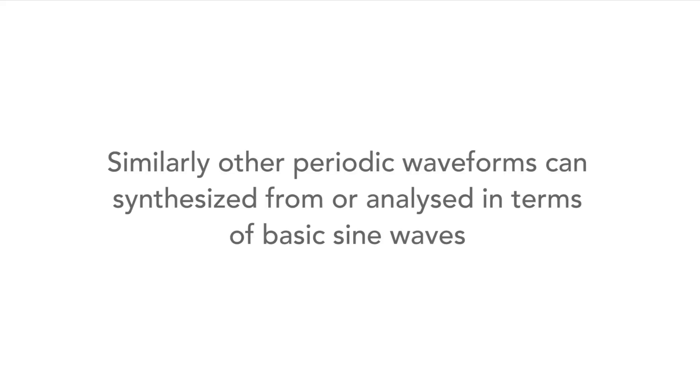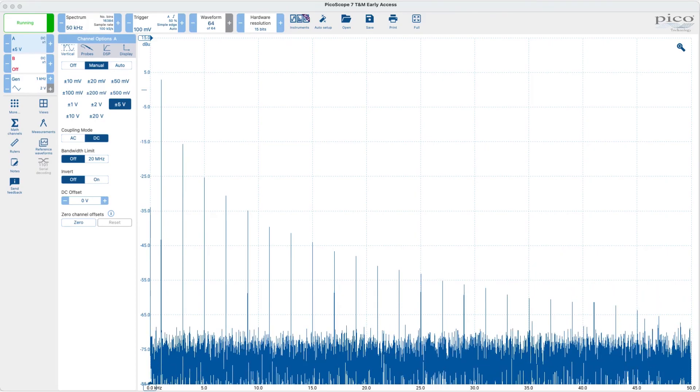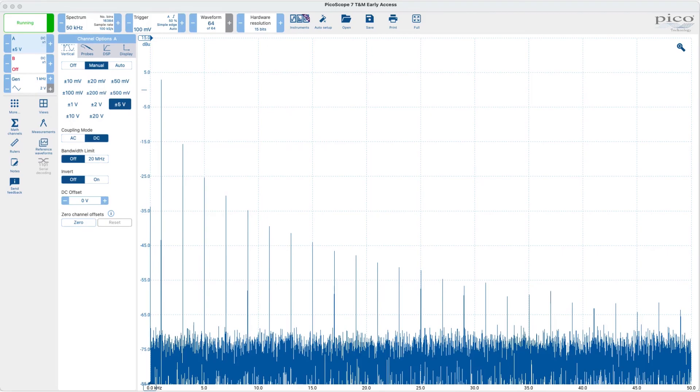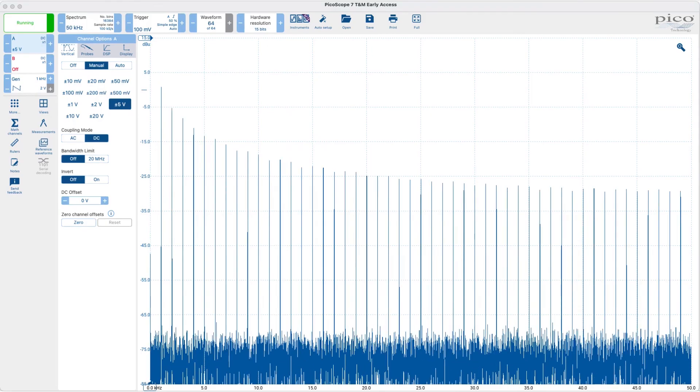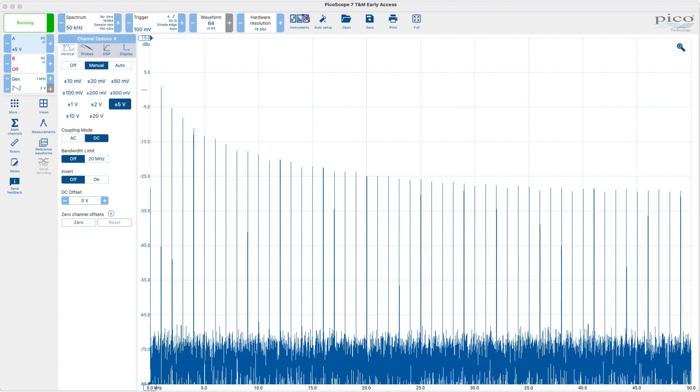Other waveforms can similarly be made from sine waves, and again we can look at the spectrum of several different waveforms to see how they differ. For example, here is a triangular waveform, and this one here is a sawtooth wave. All of these can be synthesized from sine waves.